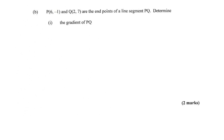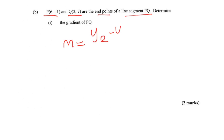Alright, so P and Q are the points of a line segment PQ and you need to determine the gradient of PQ. The gradient formula is m equals y2 minus y1 over x2 minus x1 — this is a formula you need to memorize. You substitute the values, change in y over change in x, and you get the answer. Two marks.